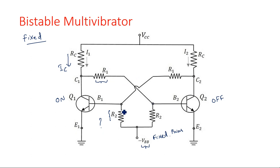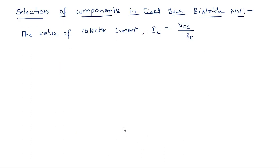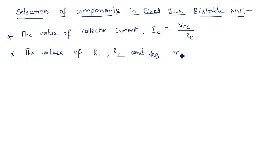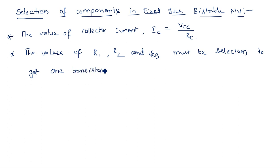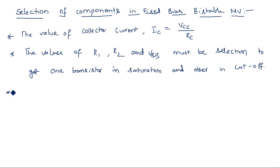If both transistors are in saturation or both are in cutoff, the circuit will not work. So R1, R2, and VBB must be selected to maintain one transistor in saturation and the other in cutoff. That is the condition.